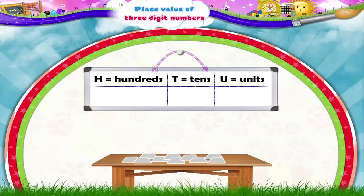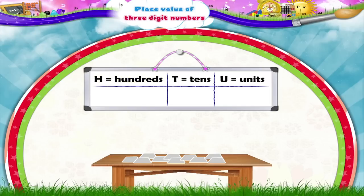Now here is a table. Three columns have been drawn. Here, H stands for hundreds, T for tens, and U for units. Now let's start.